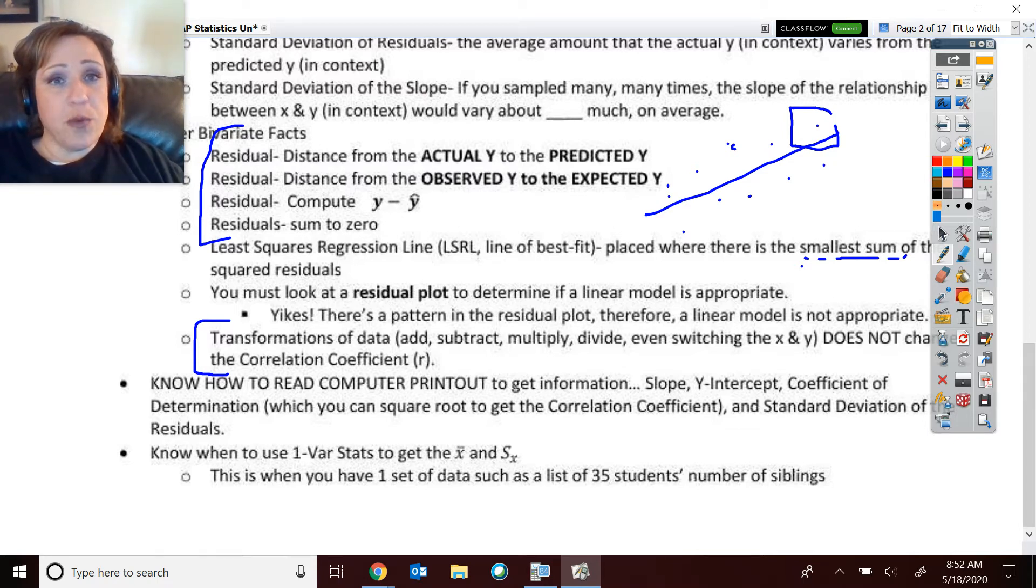Know how to read those computer printouts. I don't have a picture of one here, but you must be able to find these items: that slope, those coefficients, slope, y-intercept, coefficient of determination. That's your r squared they put on there. And then you can square root it and get the r, the correlation coefficient, represented by the r. And then standard deviation of residuals and interpreting that.